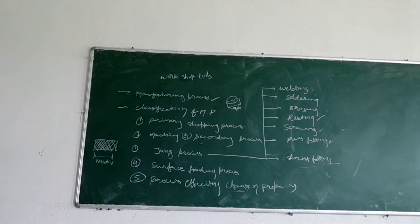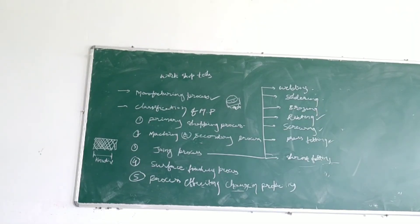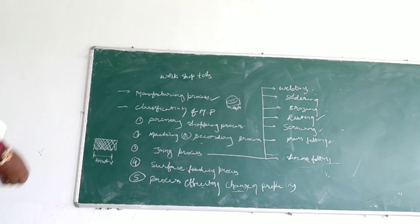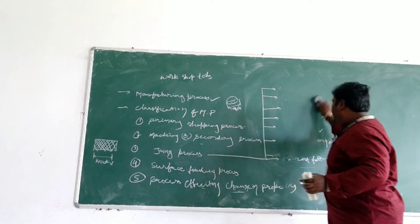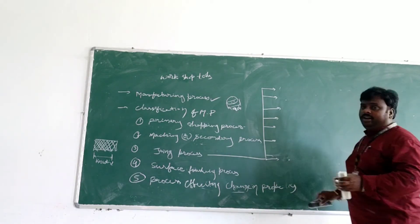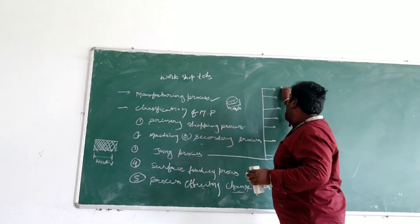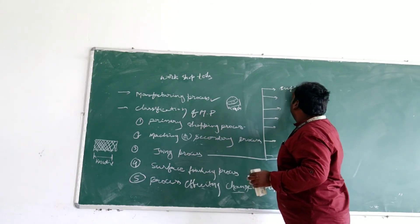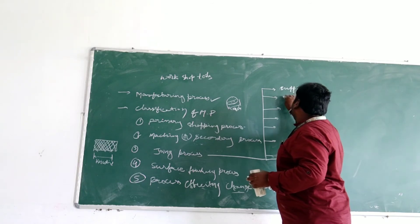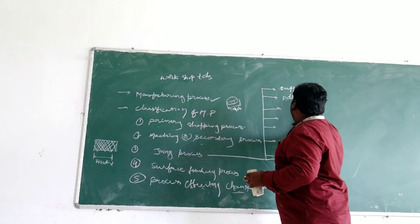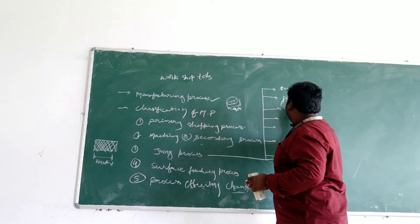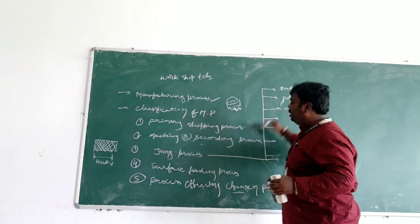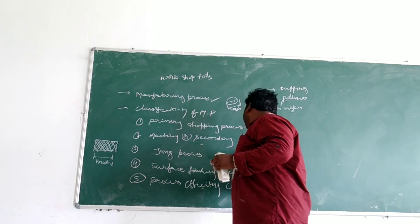Next one is the surface finishing process. Surface finishing process - we can consider polishing and lapping, buffing. This is another method - buffing operation is there. Next one is the surface finishing operation.